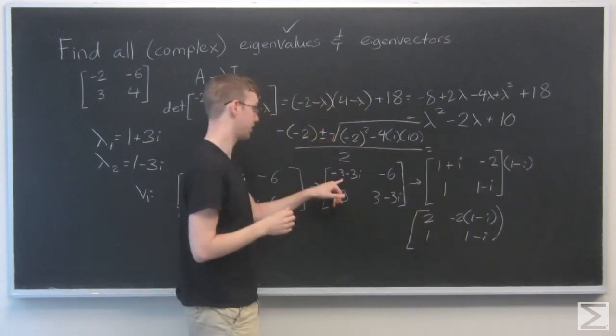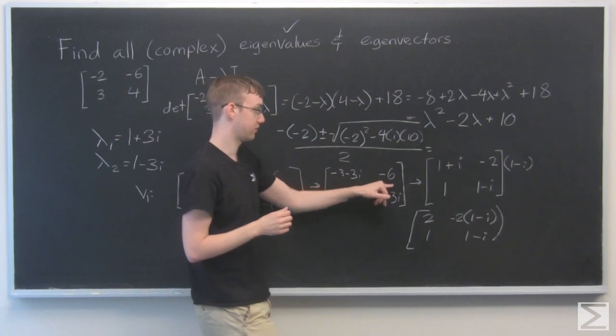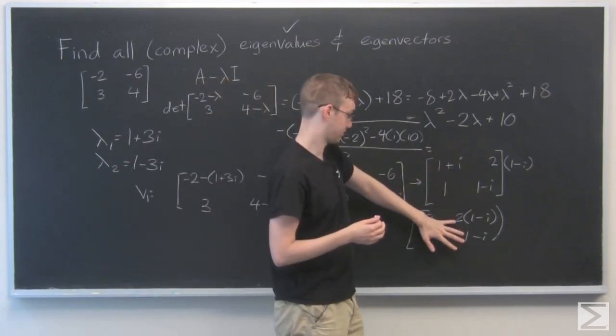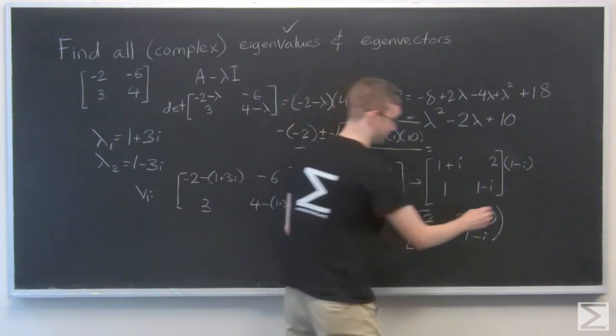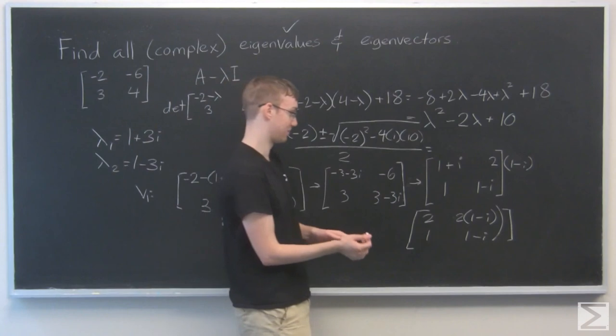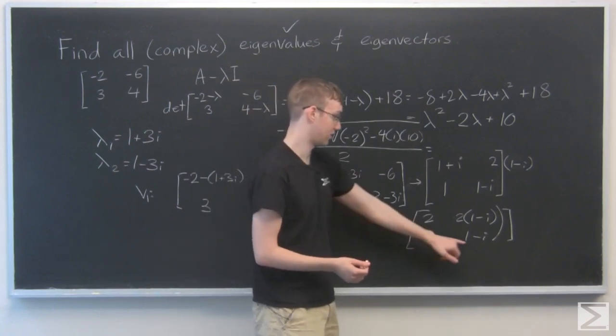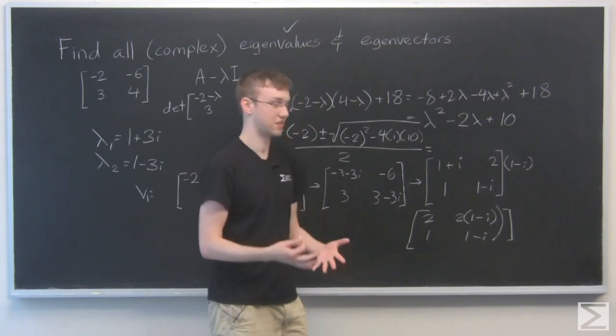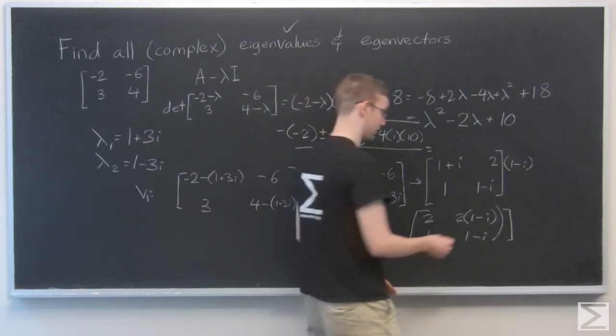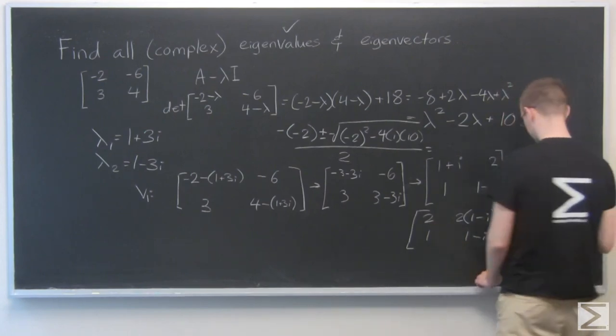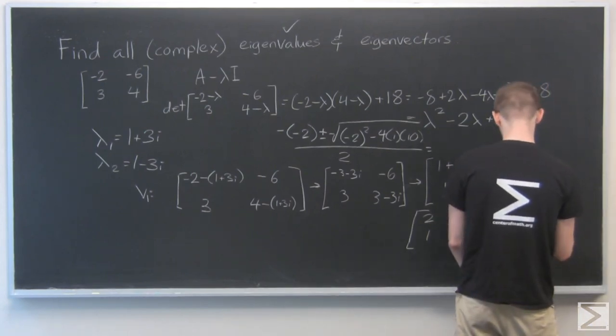OK. One quick note. When I divided here by negative 3, I should have divided this 6 by negative 3, so that 2 is actually positive. OK. I was worried why I wasn't getting a nice result, but now I do. The bottom row is just 1 and 1 minus i, and this is 2 times 1 minus i. They're the same vector. I can just divide this one in half and then subtract 1, and I'll eventually get a matrix that looks like this.